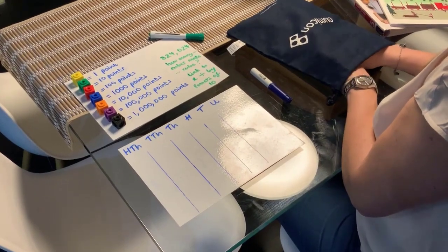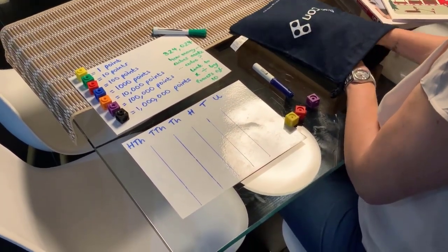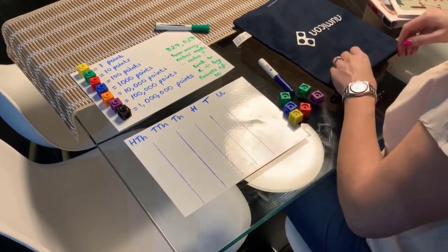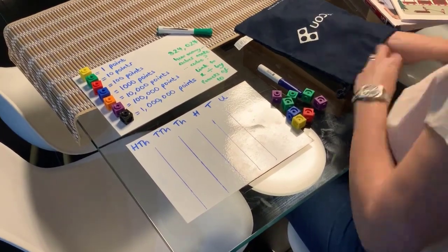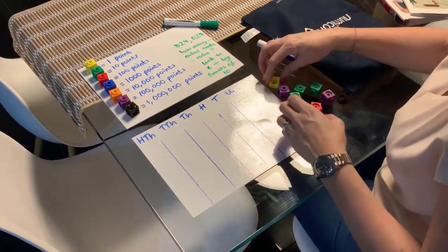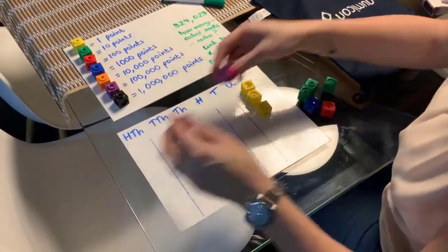I'm just going to go in, find some cubes. One, two, three, four, five, six, seven, eight, nine, ten. And I'm going to build it on the place value frame I've got here.